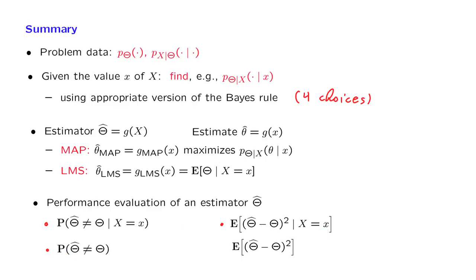If we want to now calculate the unconditional performance, then we will have to use the total probability or expectation theorem. And in that case, we can average over all the possible values of X to find the overall error.